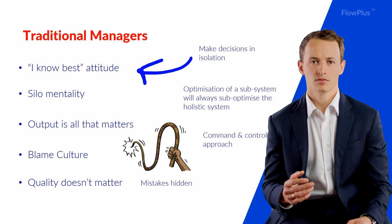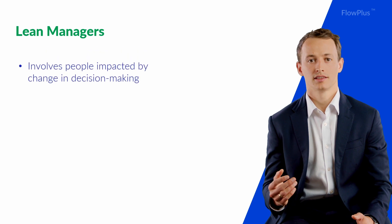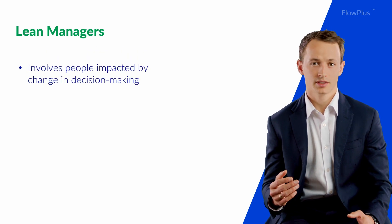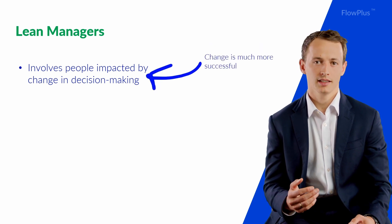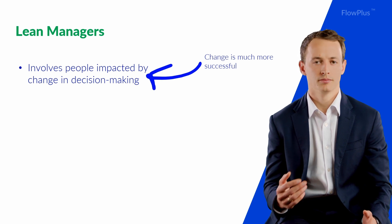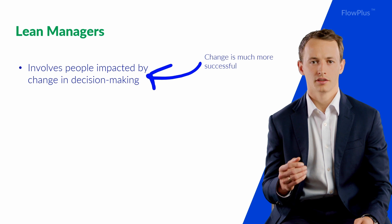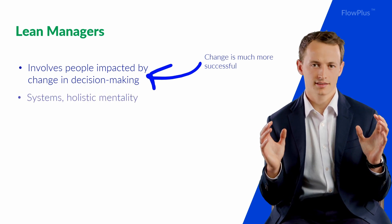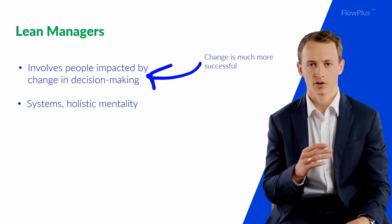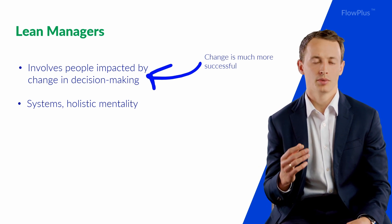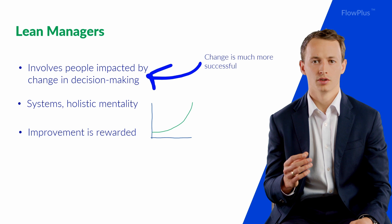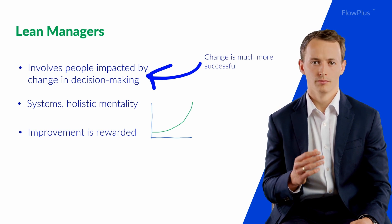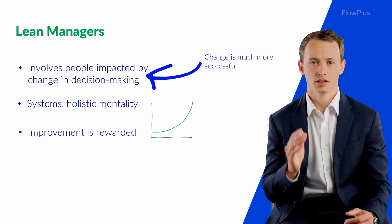Let's compare these traits with the lean approach. A lean manager involves everyone impacted in the decision making process, seeking advice from team members and respecting their opinions. This way, decisions are made as a team and the likelihood of improvements sticking is much higher. A lean manager looks at the bigger picture and takes a holistic systems view of the business, accounting for all the stakeholders that might be impacted by the decision. Improvements are celebrated and rewarded, not just output and performance, with an attitude that moving in the right direction is more important than just the performance.